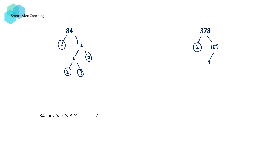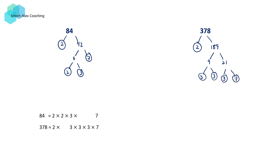189 is equal to 9 times 21, 9 is equal to 3 times 3, and 21 is equal to 3 times 7. So 378 is equal to 2 times 3 times 3 times 3 times 7.